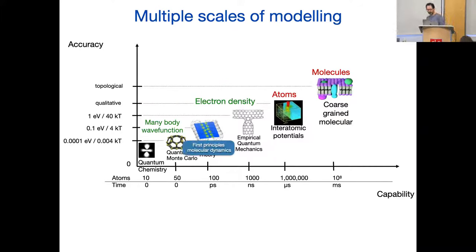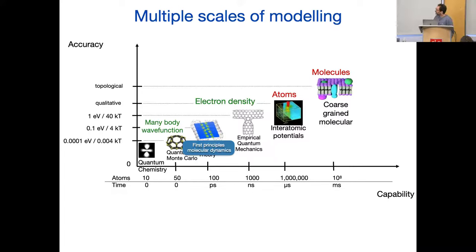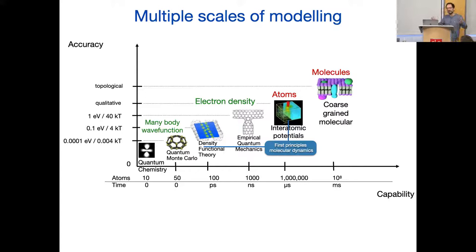First principles molecular dynamics, which is sort of an oxymoron, is where people just move the atoms without caring about where the electrons are. But because we don't have models of how atoms move independently of the electrons, you use methods with capabilities of hundreds of atoms in picoseconds, while really you want to model thousands of atoms. You don't care about the electrons, but you're forced to use methods that are far too expensive.